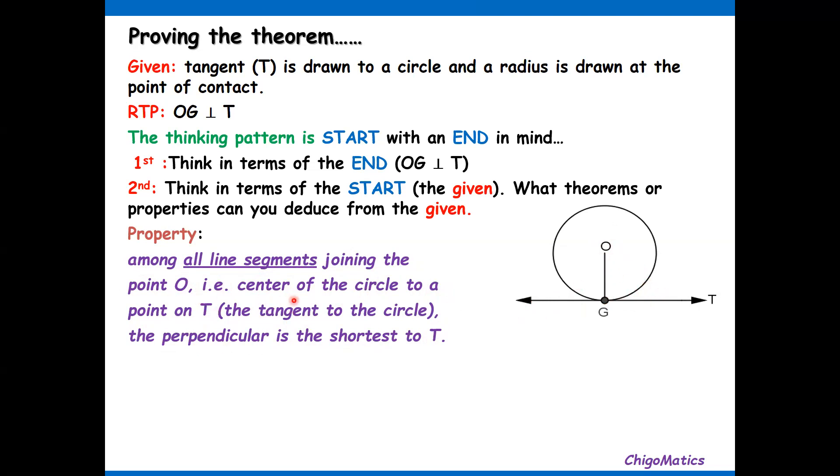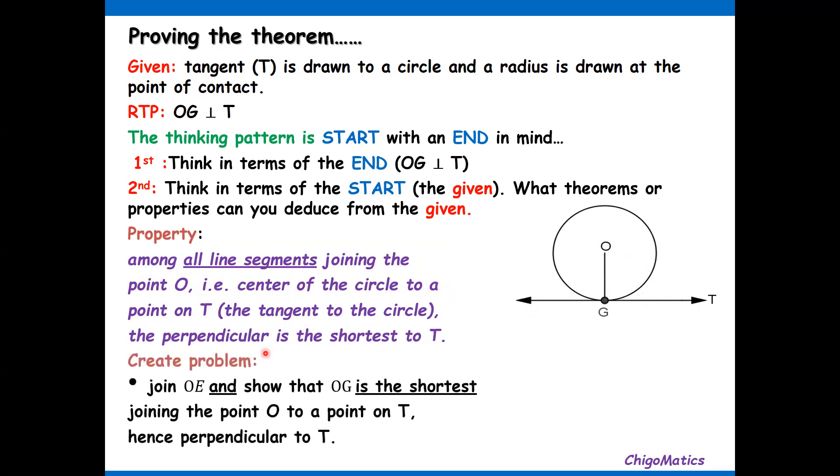That's a property, but we need to demonstrate this. So we create a problem: we join OE, E being on the tangent, and show that OG is the shortest joining point O to a point on T, hence perpendicular to T.